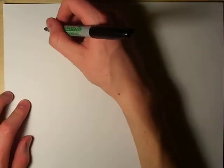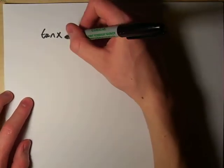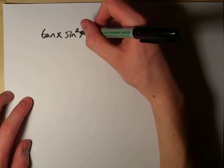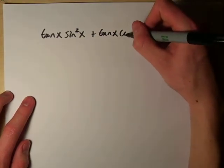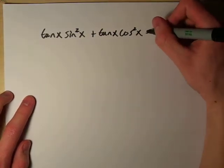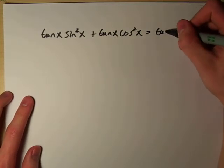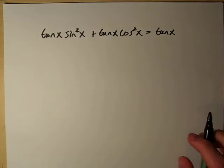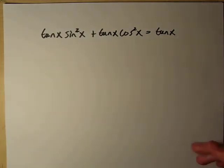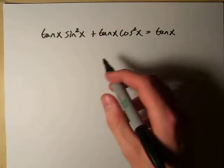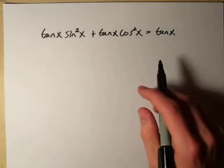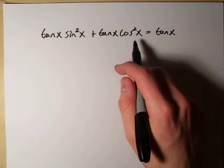Next, let's have a look at one that's a little bit different but uses the same idea. We have tangent x times sine squared x plus tangent x times cosine squared x equals tangent x. Normally we'd turn the tangents into sine over cosine to see if anything cancels, but here it's going to be easier to leave them as tangent and have them carry along with our sine and cosine terms.